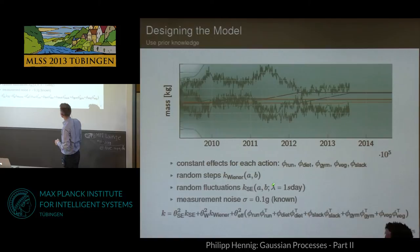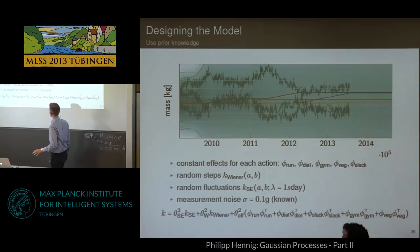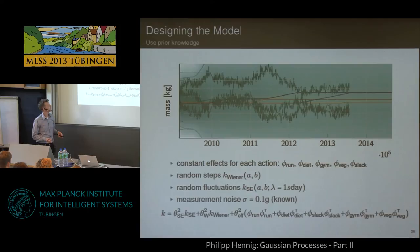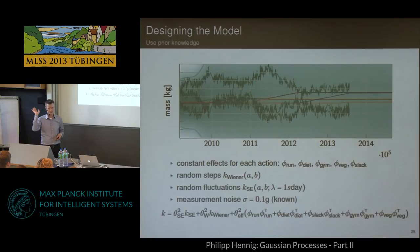On top of the lifestyle features, I've decided to model three other processes. First: random steps up and down in my weight — things like going to a wedding and eating a lot — modeled with a Wiener process, which is a random walk. Second: short-term fluctuations related to hydration and other daily variations that go up and down but don't stay — modeled with a square exponential kernel with a length scale of about one day. Third: measurement noise from my scale, which has a precision of 0.1 kilograms according to the manufacturer.